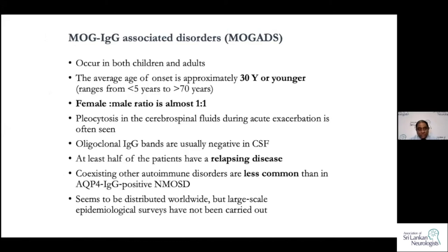As opposed to MS and also NMOSD, MOG disease occurs commonly in both children and younger adults. The female-to-male ratio is not as striking as in MS. In NMOSD with aquaporin-4, about 90% of patients are female, but in MOG disease the sex ratio is more equal. Oligoclonal bands are usually negative in MOG disease. Coexistence of other autoimmune diseases is also less common, unlike aquaporin-4 disease where patients may also have SLE, myasthenia gravis, or ITP.